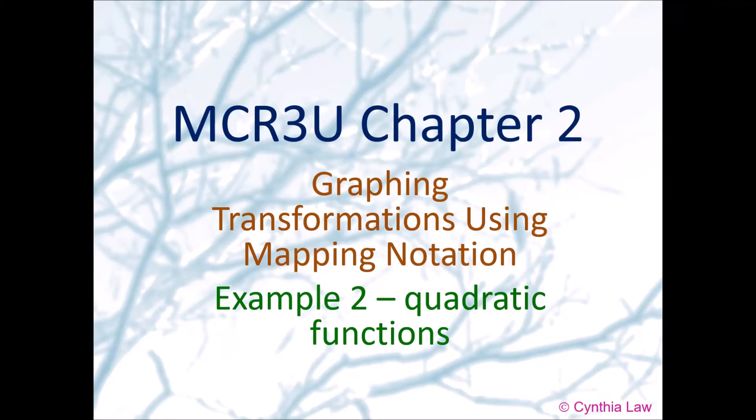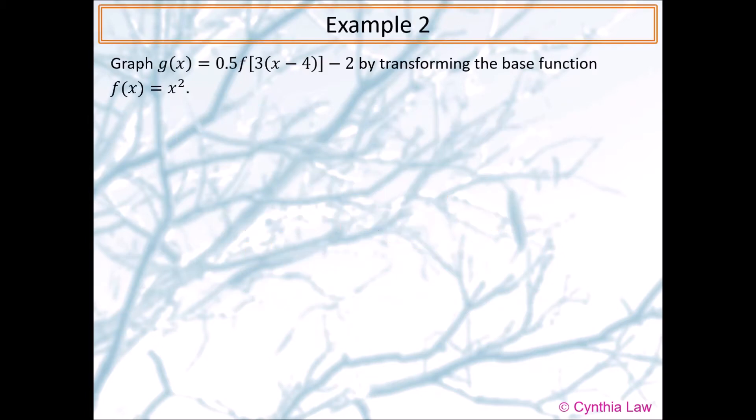Graphing transformations using mapping notation. Example 2: Quadratic functions. Graph g(x) = 0.5f[3(x - 4)] - 2 by transforming the base function f(x) = x².